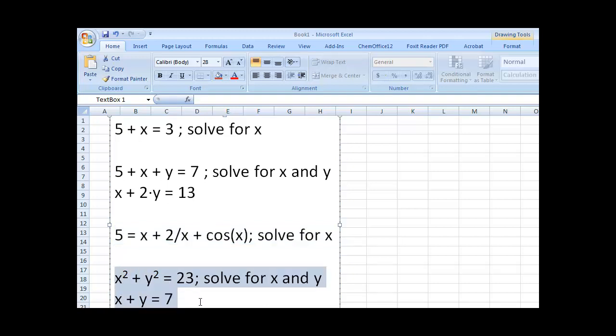Another example is this one right here. x squared plus y squared equals 23. And then we have another equation, x plus y equals 7. And we're asked to solve for x and y. So, these latter two equations are known as nonlinear equations. Whereas, these top two problems are known as linear.